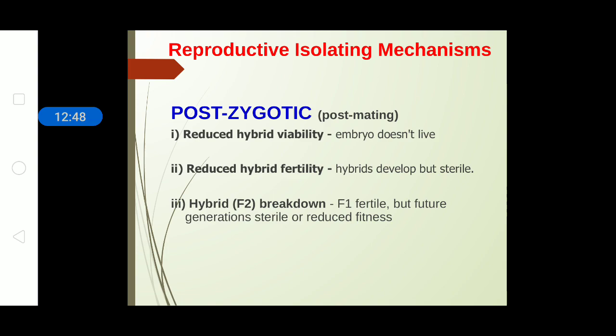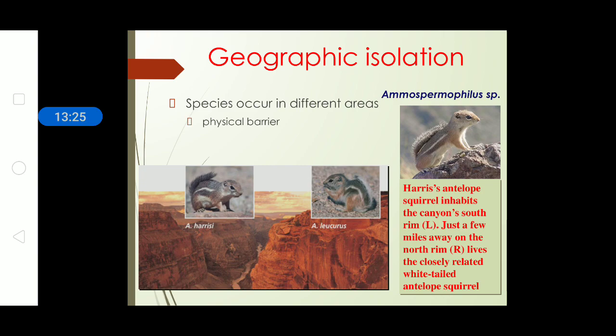Postzygotic factors include: reduced hybrid viability — the sperm successfully mates with the ovum and forms a zygote, but the zygote soon dies; reduced hybrid fertility — the hybrids develop but are not able to reproduce, so the generation does not continue and there is no speciation; and hybrid breakdown — fertile hybrids produce future generations that are sterile or of reduced fitness and die out very soon.